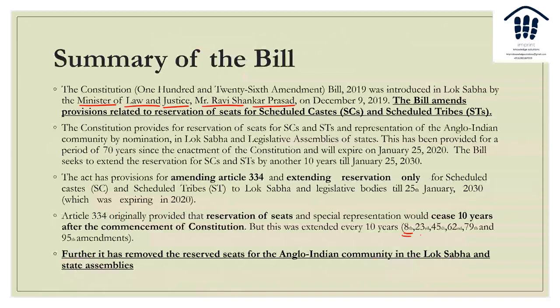In previous years, this extension has happened many times. There was the 8th Amendment, the 23rd, the 45th, the 62nd, the 79th, and the 95th. Every time it was extended — first it was 10 years, then made 20, then 30, then 40, then 50, 60, 70, going like that. The idea was always to increase it, because everybody thought the reservation was only for 10 years and would cease after 10 years, but it never has. A lot of people say it's political in nature, but there are two sides to the coin.